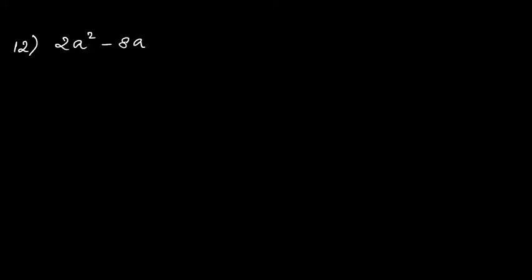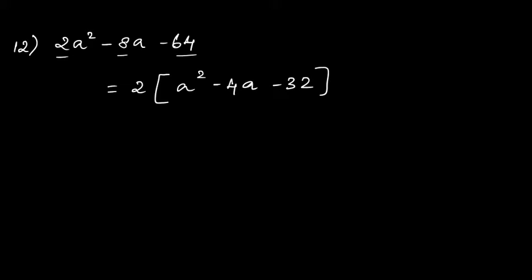12th question: factorize completely 2a²-8a-64. All three numbers 2, 8, and 64 are divisible by 2, so take out the number 2. We will have a²-4a-32.